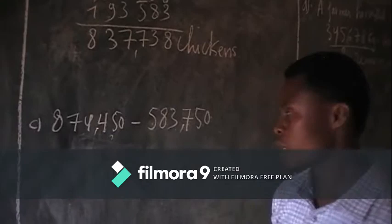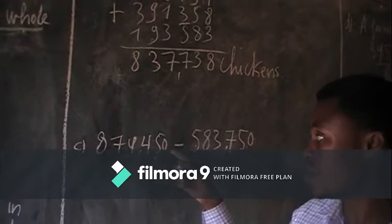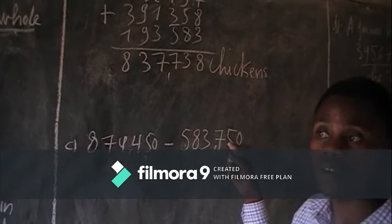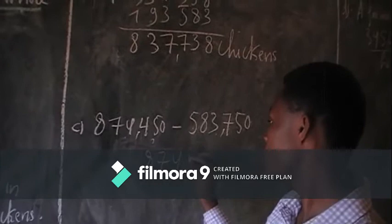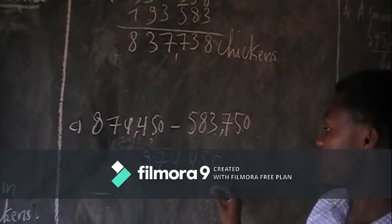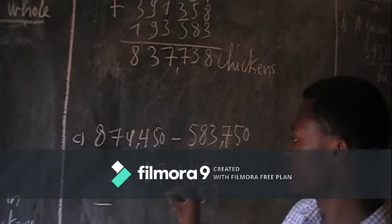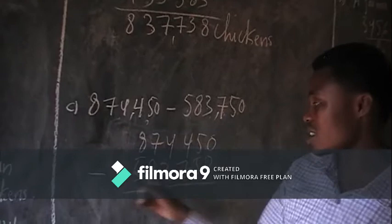Now we have number C, and here we are having minus. So 874,1450 minus 500,8350. I want to write those numbers vertically: 8, 7, 4, 4, 5, 0 minus 0, 5, 7, 3, 8, 0, 5.